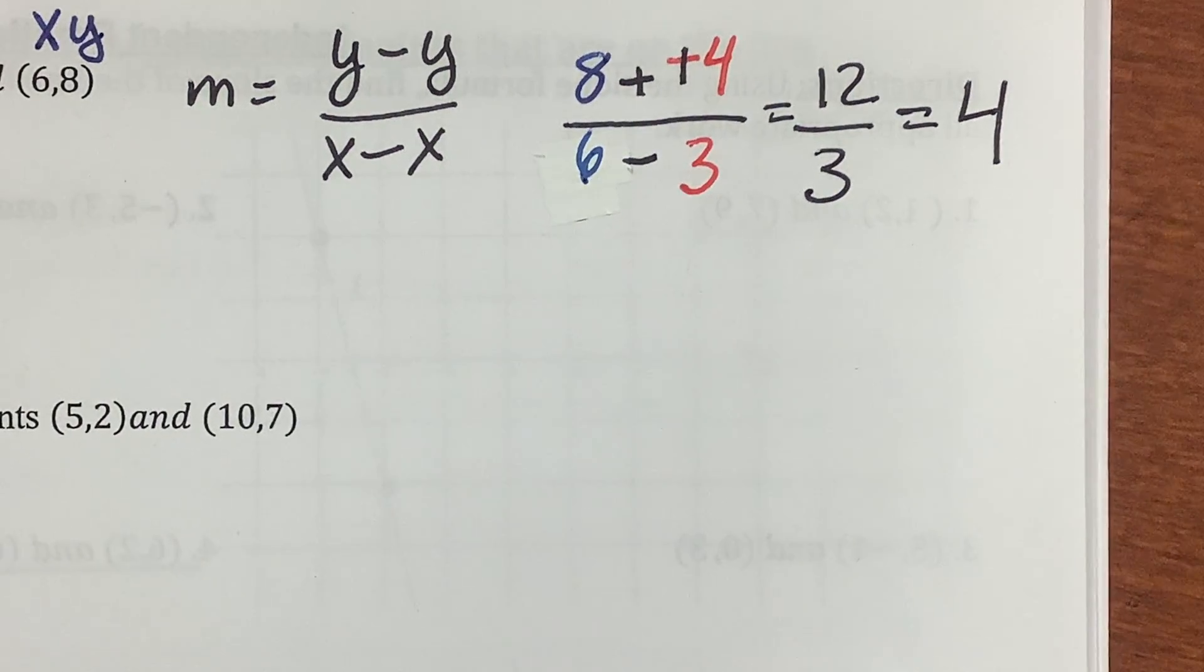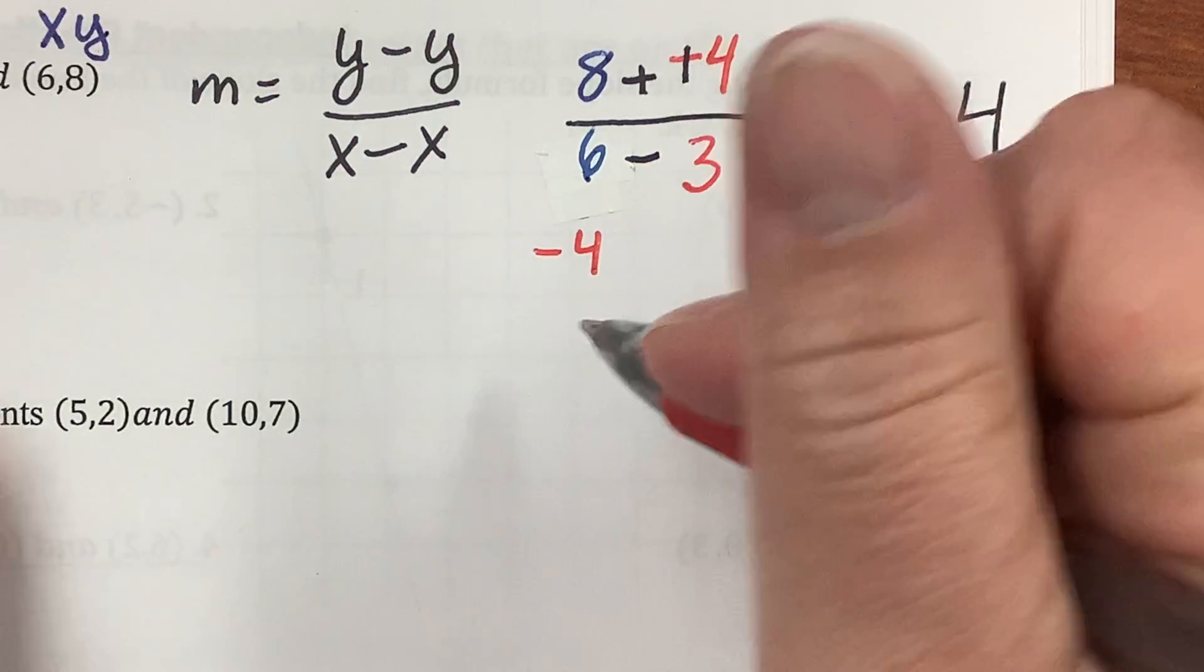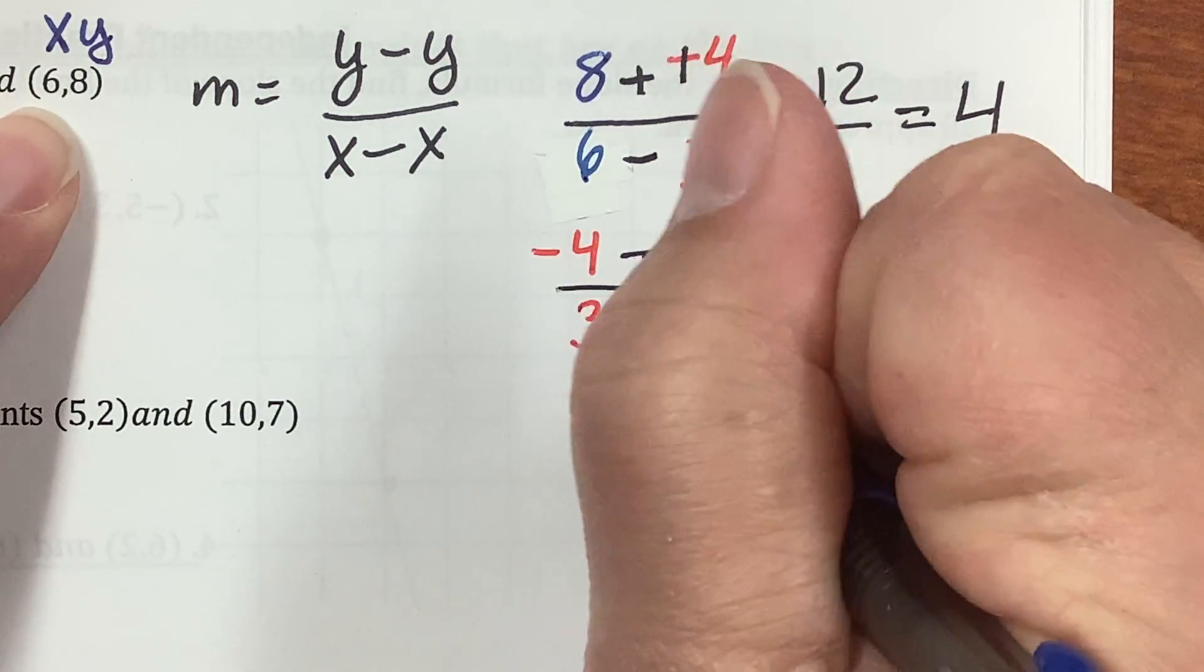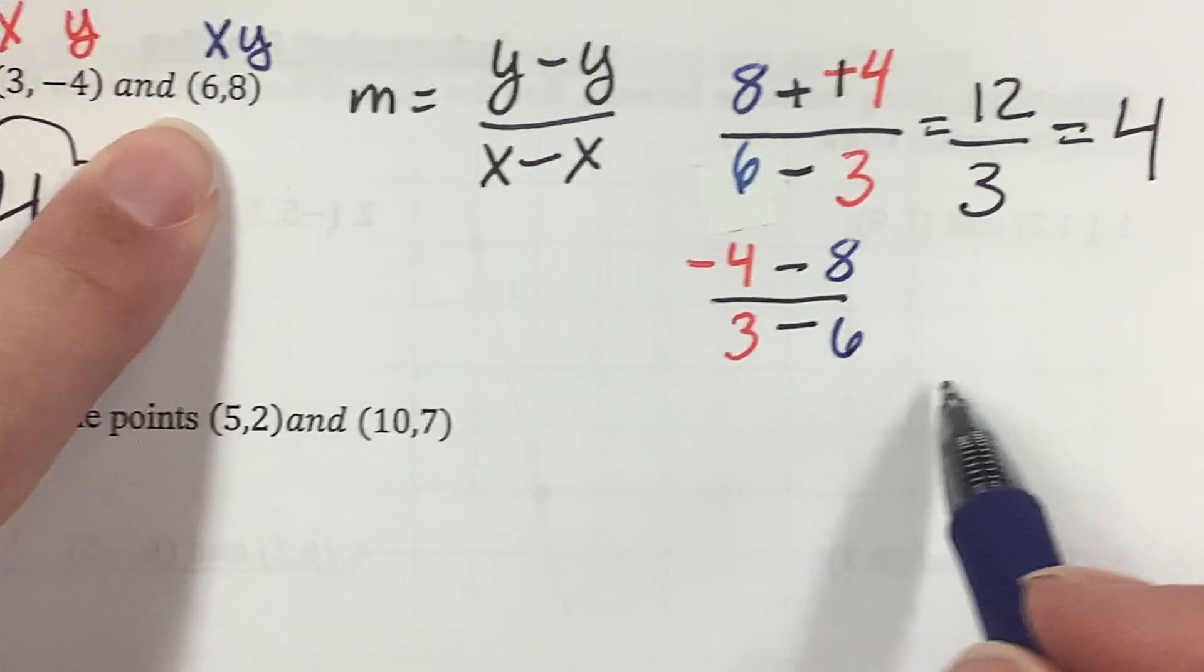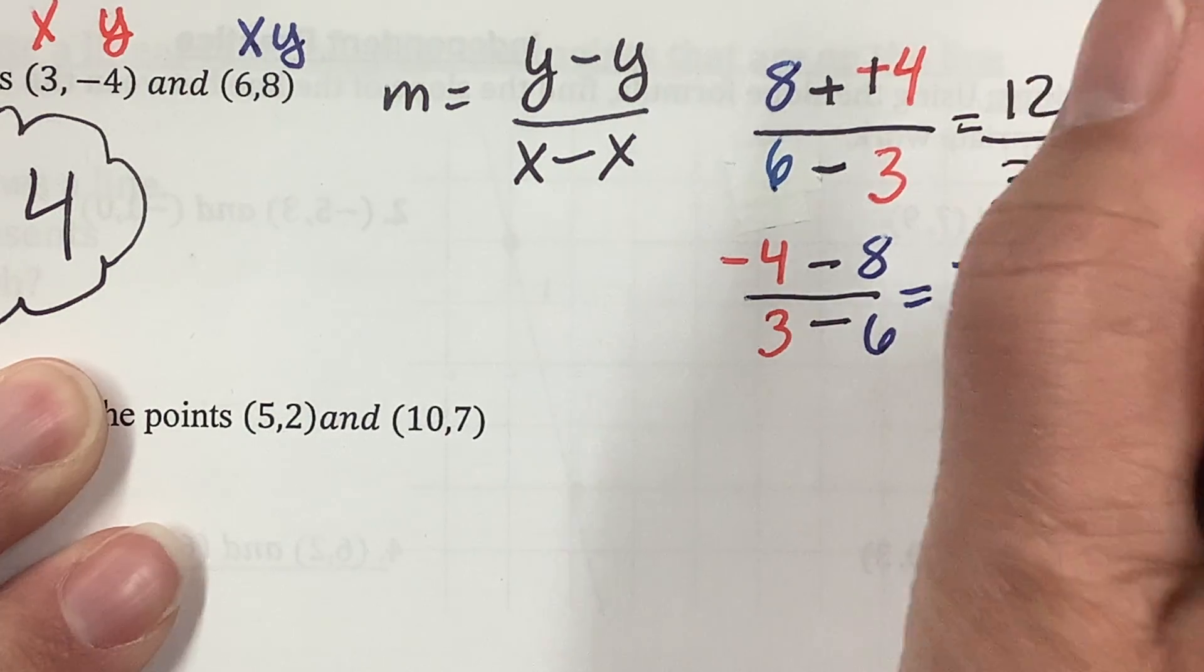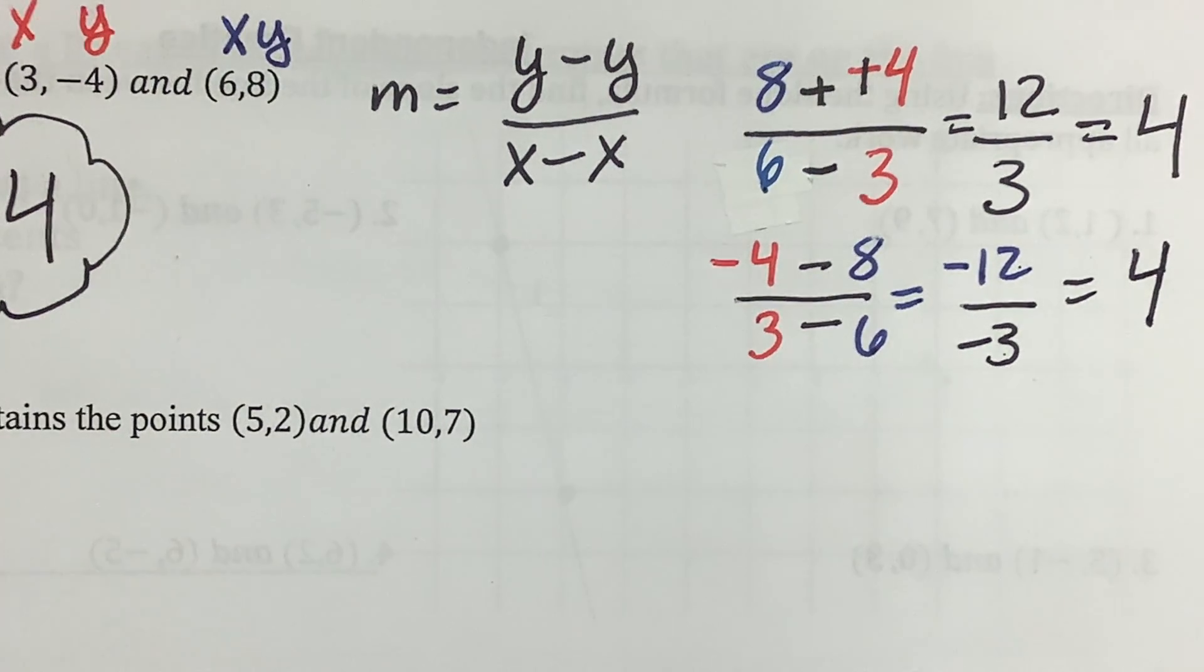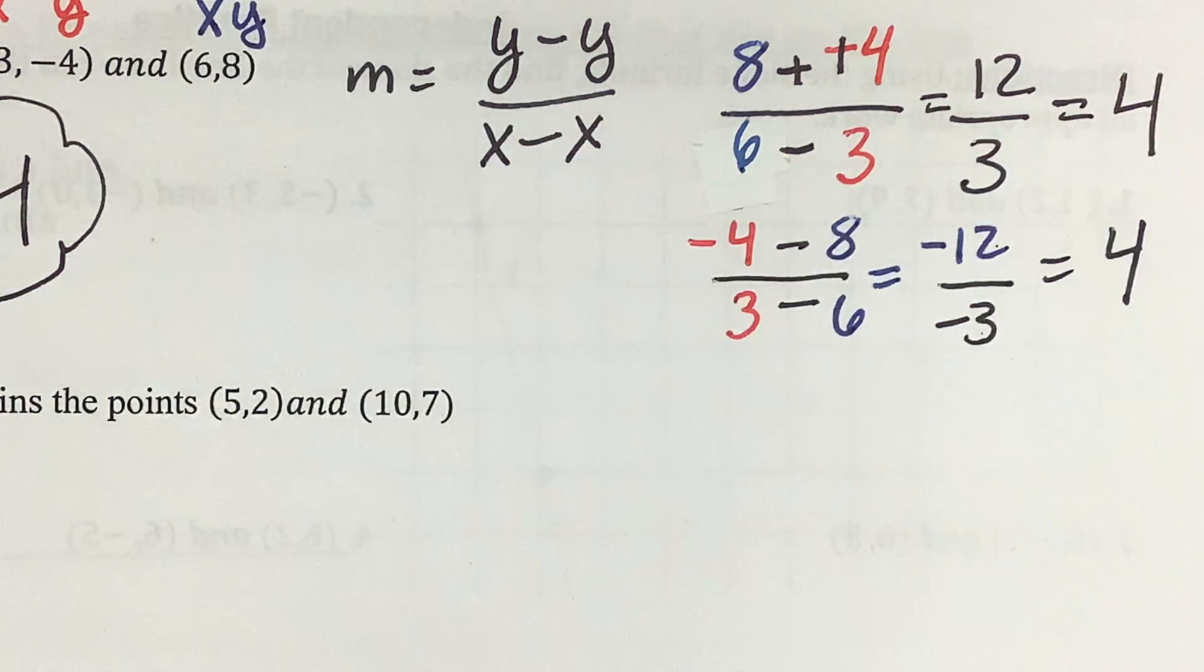I just want to show you that it doesn't really matter which one you put first. So, let's try the other one first. Let's do negative 4 over 3 minus 8 over 6. Y minus y over x minus x. Negative 4 minus 8 is negative 12. Over 3 minus 6 is negative 3. And look at that. Negative 12 divided by negative 3 is still 4. It doesn't matter which order it is. As long as you keep y over x and y over x that go together.